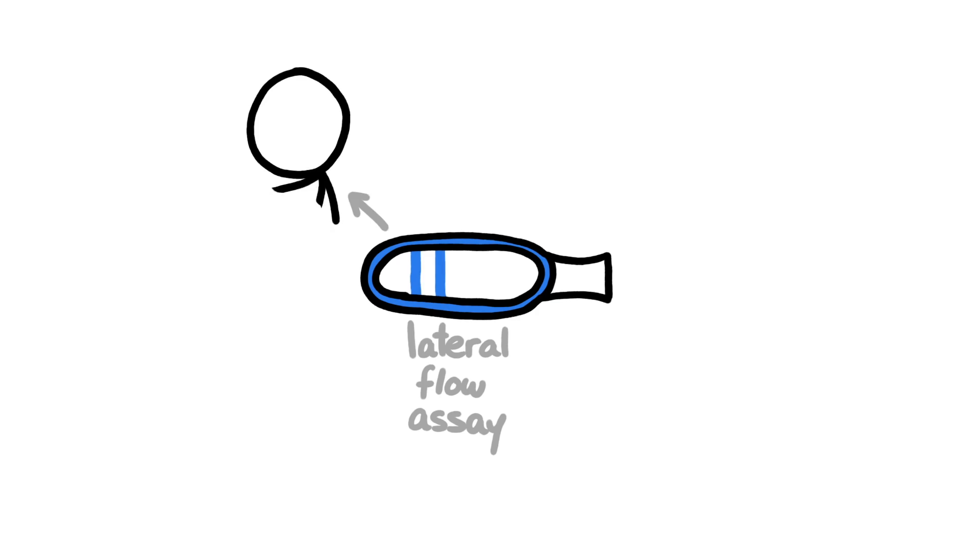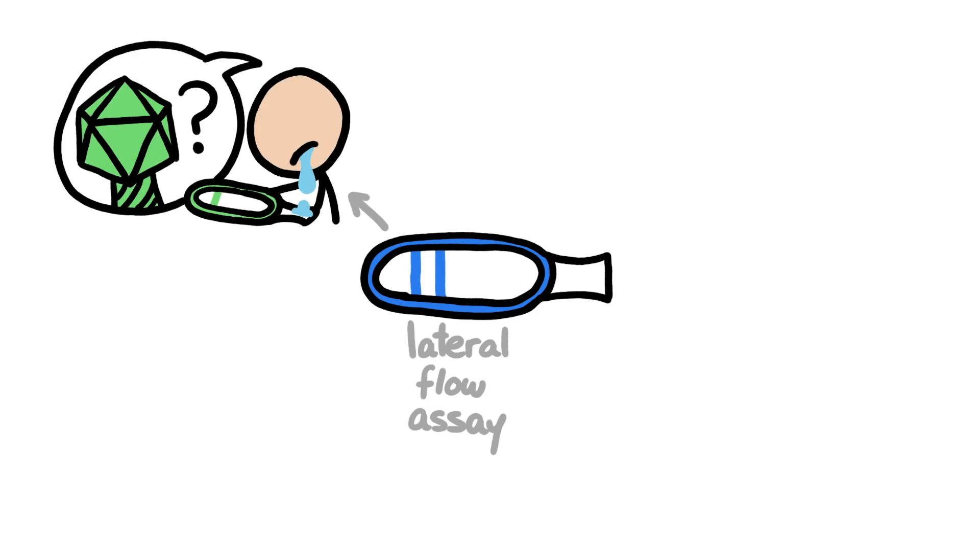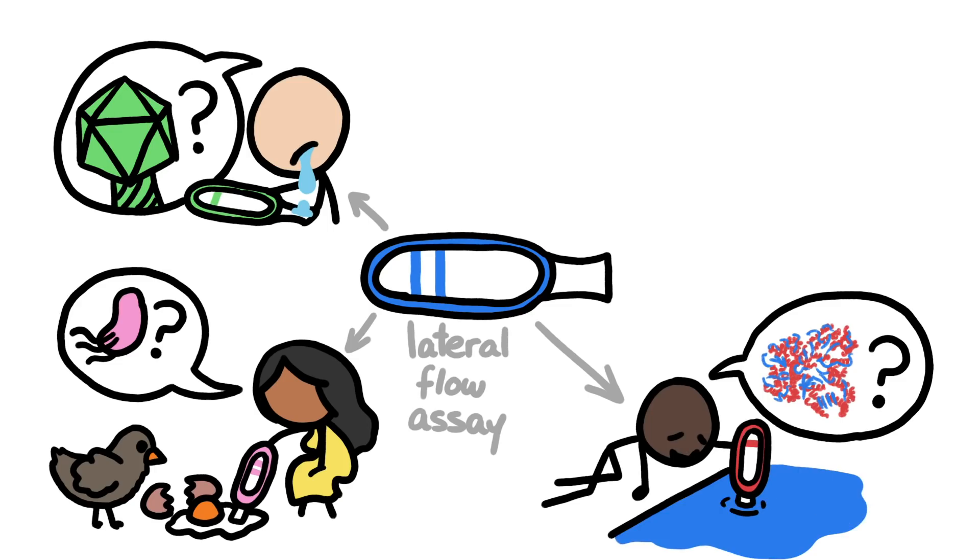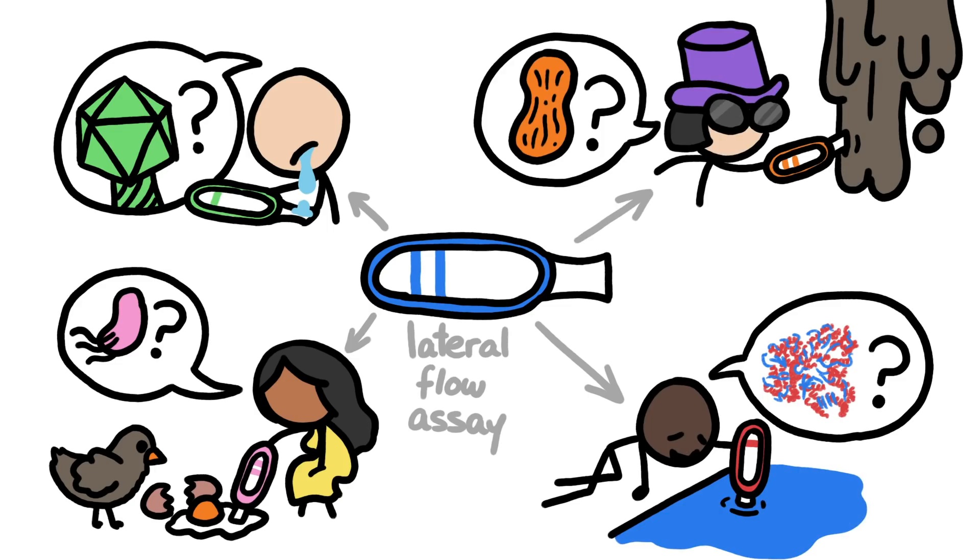But the same type of test—a sample pad and a paper stick that changes colors to show a positive or negative result—can test people's spit for pathogens, lets chicken farmers test eggs for salmonella, municipal managers test drinking water for contaminants, and chocolate factory owners test their creations for stray nuts.